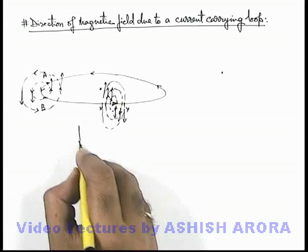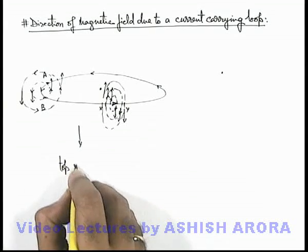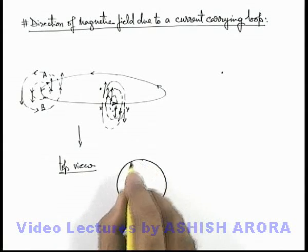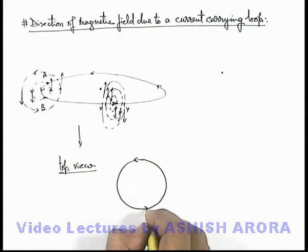So if we just draw the top view, here we can see from the top view the coil will look like a perfect circle which is carrying a current in anti-clockwise manner.